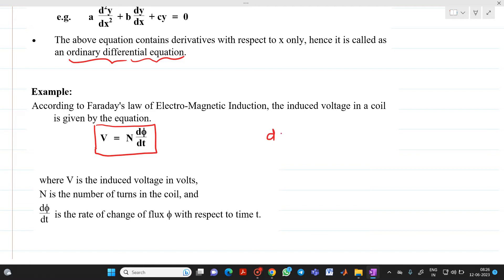So we can write this equation as d phi by dt will be equal to v by n. So we will get some kind of this differential equation wherein we are going to take a differentiation with respect to t.